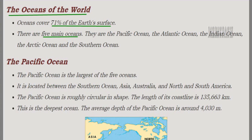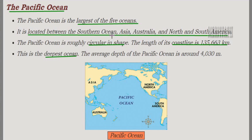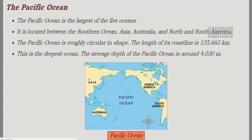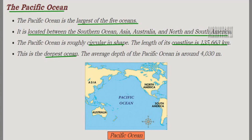The Pacific Ocean is the largest of the five oceans. It is located between the Southern Ocean, Asia, Australia, North America, and South America. The Pacific Ocean is circular in shape and its coastline extends up to 1,35,663 kilometers. It is also the deepest ocean, with a depth of almost 4,030 meters.